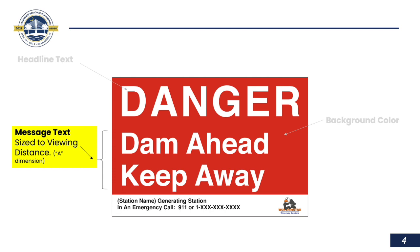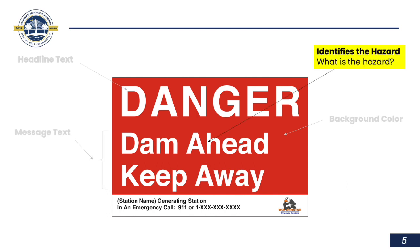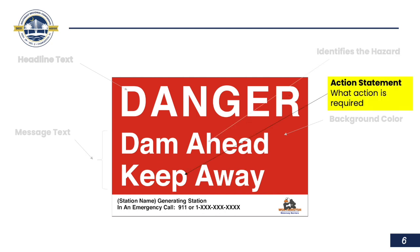Following the establishment of our headline, we move on to the message text — this is really the meat of the sign. This is where we convey the message to folks approaching our dams to tell them what the danger is and what action we expect of them. The first line of message text defines the hazard. We want to keep this simple; in the example here we're saying 'dam ahead' — not the type of dam, not the color or length. All we're saying is 'dam ahead.'